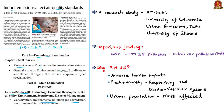A recent study was conducted by researchers from IIT Delhi in collaboration with the University of California, Urban Emissions (an NGO platform with a repository of air pollution research), and the University of Illinois. The researchers found that 40% of total PM2.5 recorded in the Gangetic Basin is due to the use of firewood, kerosene, and coal in households — meaning indoor air pollution is a major contributor to outdoor air pollution in the Gangetic Basin.